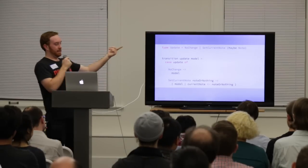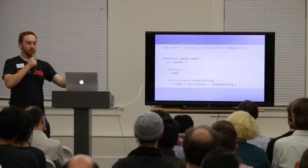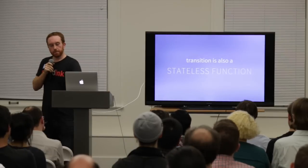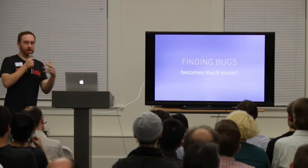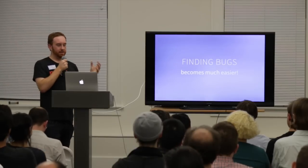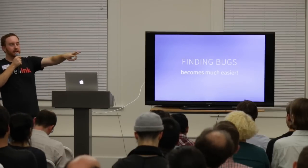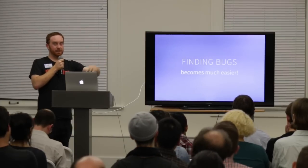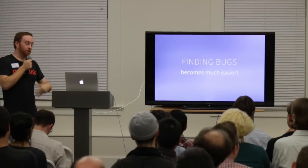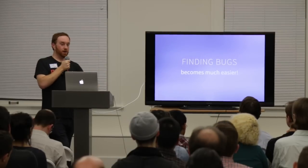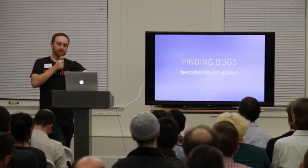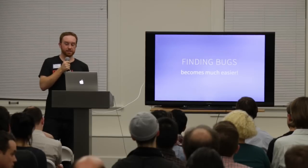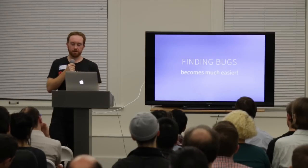This transition function is also a stateless function — same update and same model always gives the same result with no side effects. The more stateless functions you have, the easier it becomes to find bugs. If you have three stateless functions, no matter what order they run in, whether concurrent or involving Ajax or IndexedDB, they can't affect each other. All the functions you know are stateless cannot be responsible for your bug unless the function you're investigating is calling them.